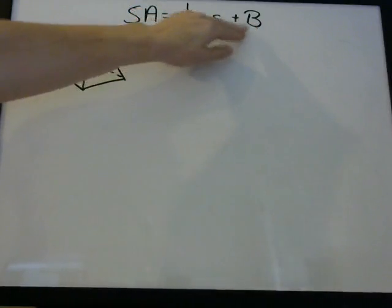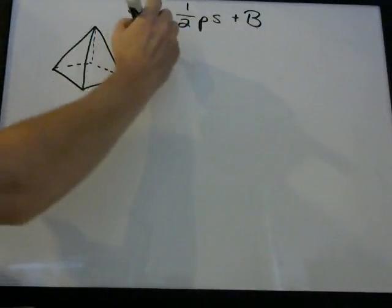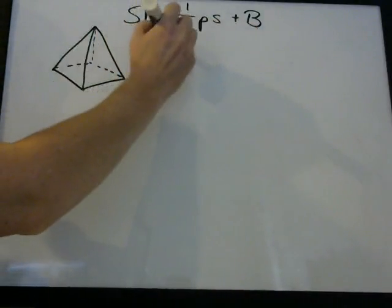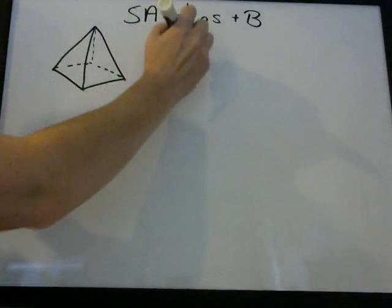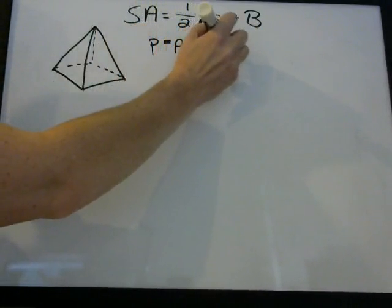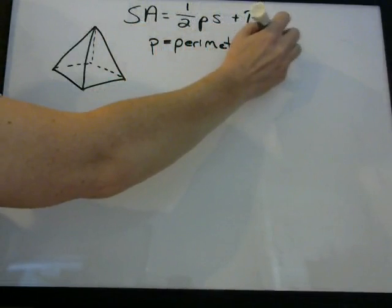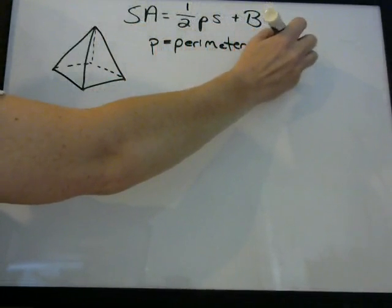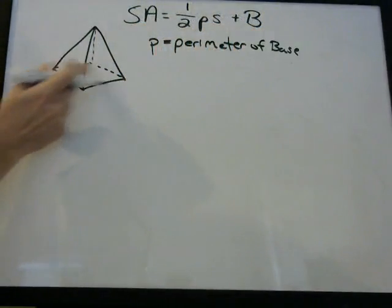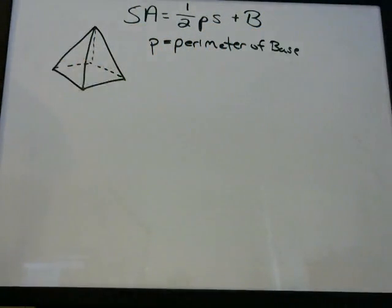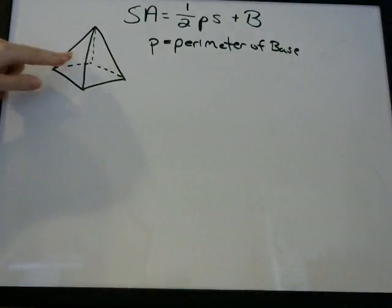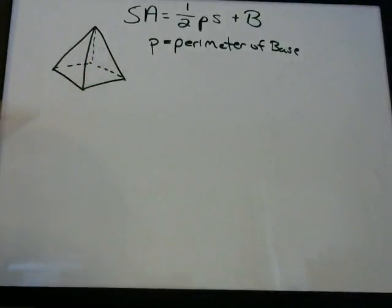What do these letters mean? P means perimeter of the base. The base is the bottom. Here we have a pyramid — it has four rectangular sides and then a square on the bottom.